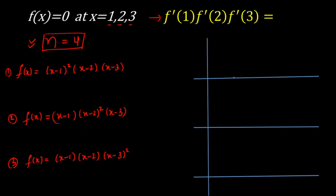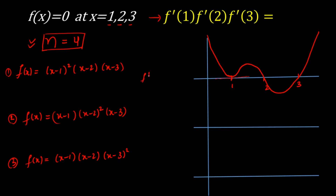The roots are clearly visible at 1, 2, and 3 on the graph. As x → +∞ and x → −∞, f(x) is positive. In Case 1, the graph touches the x-axis at x = 1 with a local minimum. Drawing a tangent at x = 1 shows it is parallel to the x-axis, so f'(1) = 0.